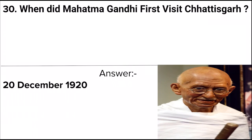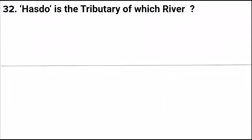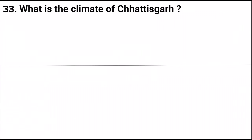Next question: When did Mahatma Gandhi first visit Chhattisgarh? Answer: 20th December 1920. Next question: How much percentage of steel is produced from Chhattisgarh out of total steel production of India? Answer: 15 percent. Next question: Hasdeo is the tributary of which river? Answer: Mahanadi.